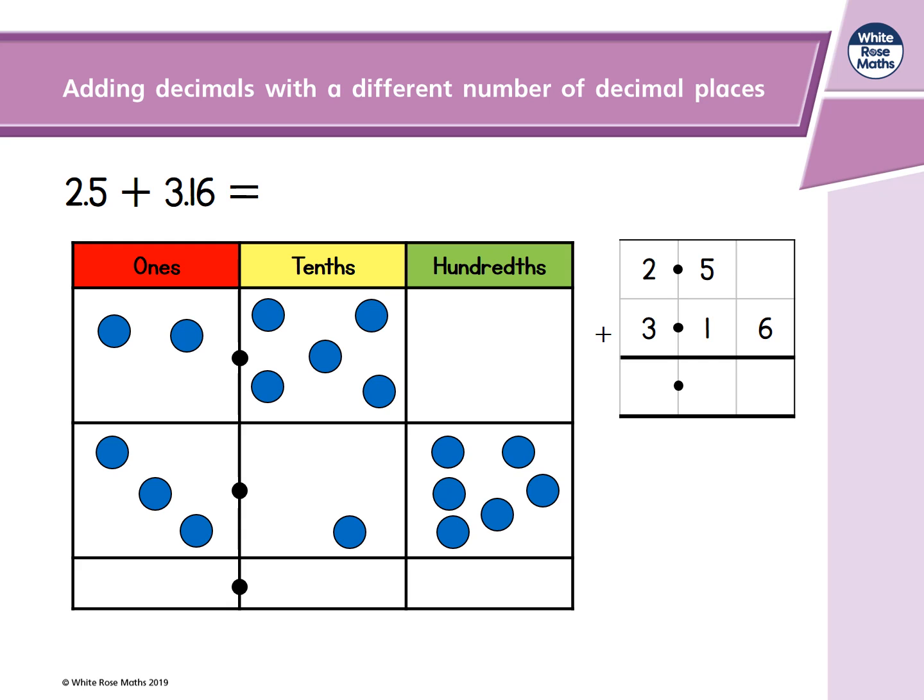The first thing that we need to do is look at the hundredths column. We need to do 0 hundredths add 6 hundredths. This is equal to 6 hundredths.